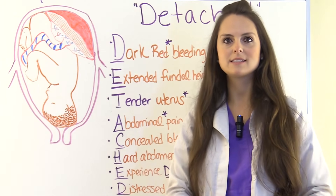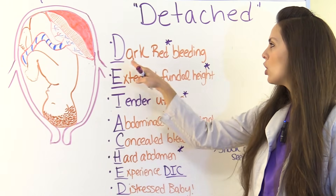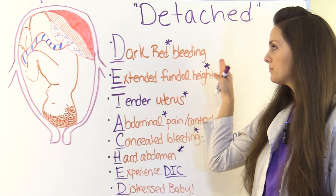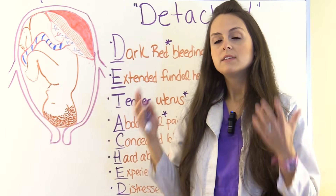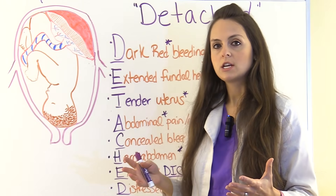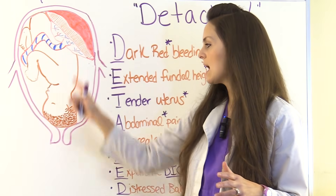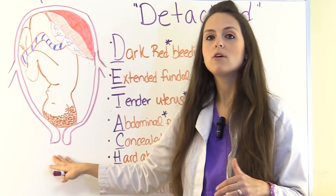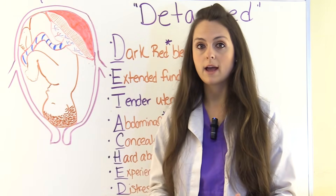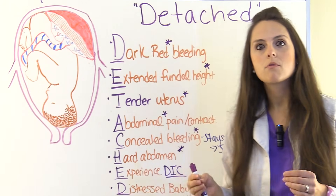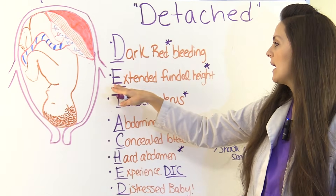D stands for dark red bleeding. The bleeding in this condition is usually concealed, and by the time it comes out through the vaginal area it has been there for a while, making it dark red — as opposed to placenta previa, which typically presents with bright red bleeding.